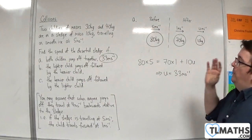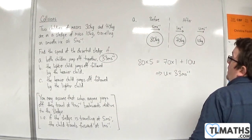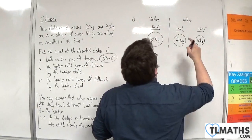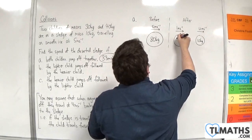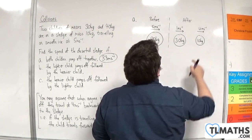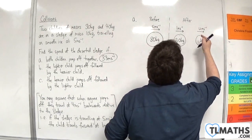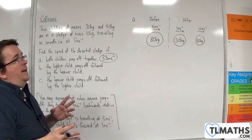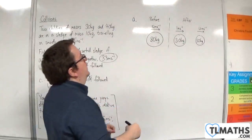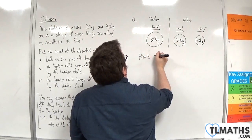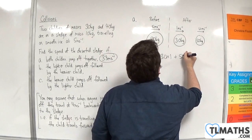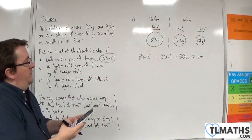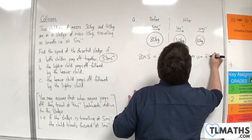For part B, the lighter child jumps off first, followed by the heavier child. The lighter child (mass 30 kilos) travels to the right at 1 metre per second, leaving the heavier child and the sledge (50 kilos total). Using conservation of momentum: 80 times 5 equals 30 times 1 plus 50 times U. So 80 times 5 minus 30, divided by 50, gives 7.4 metres per second.